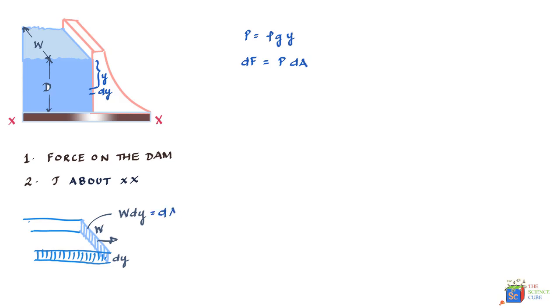And we know that delta A area is nothing but w into dy, so this is your dA. And we already have pressure p as ρgy, so we can say the force, or rather the delta force dF, is equal to ρgy times the delta area which is w dy.